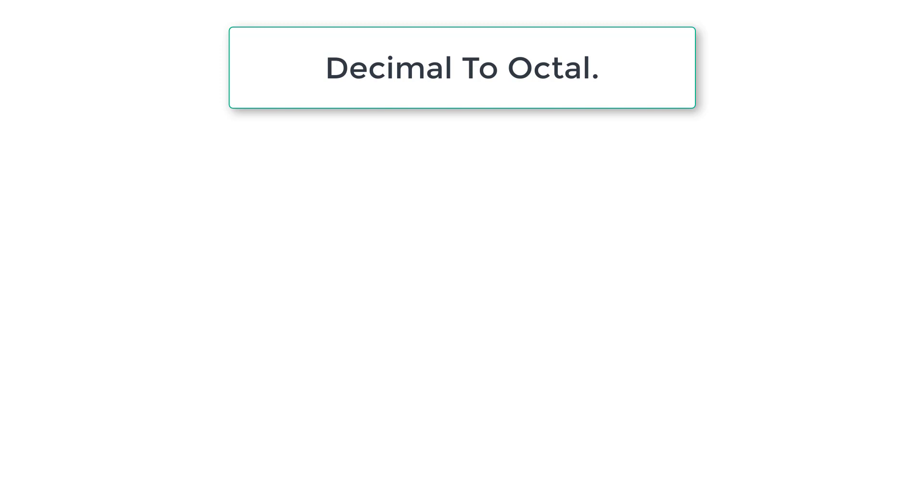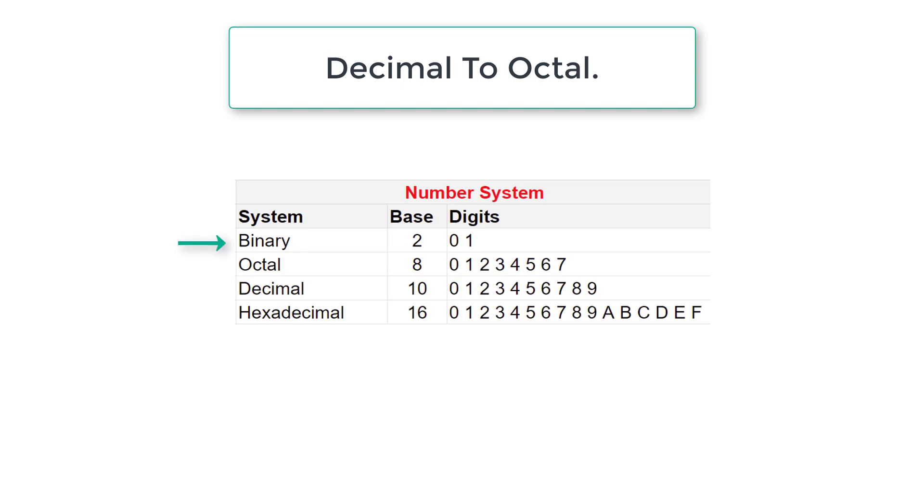Let's write a C program to convert a number from decimal number system to octal number system. In general, binary number system uses base 2 and digits 0 and 1. Octal number system uses base 8 and digits 0 to 7, and decimal number system uses base 10 and digits from 0 to 9. Hexadecimal number system uses base 16 and digits 0 to 9 and then alphabets A, B, C, D, E, and F.